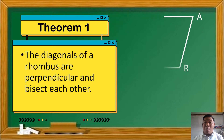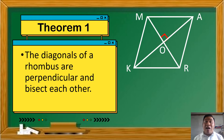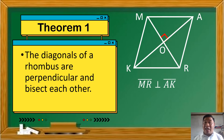Let's have Rhombus M-A-R-K with diagonals M-R and A-K na nag-intersect at point O. Nakita natin na nag-intersect talaga yung mga diagonals na yan, at nung nag-intersect sila, nakabuo sila ng right angle — nakita naman natin yung maliit na square dyan, ibig sabihin right angle talaga yan. So, those diagonals are perpendicular — in symbols, segment M-R is perpendicular to segment A-K. Ang inverted T na symbol ang ginagamit to show perpendicularity.